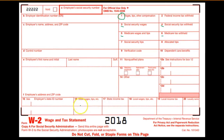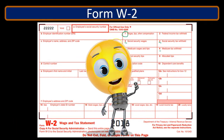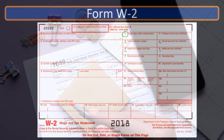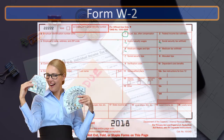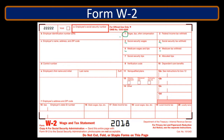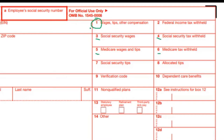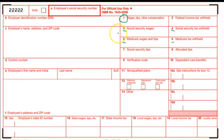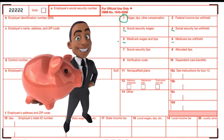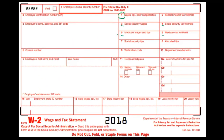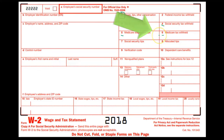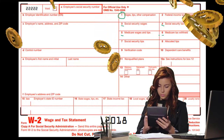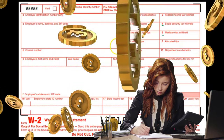Those are the main W-2 components we use for reporting. Some figures may not exactly tie to the 941 totals depending on things like tips. However, if we add up wages across all W-2s, we should be able to reconcile them to the 941s in some way — same with social security and Medicare wages and tax withheld. Adding them up across all employees should allow us to reconcile to the four quarterly 941 forms.